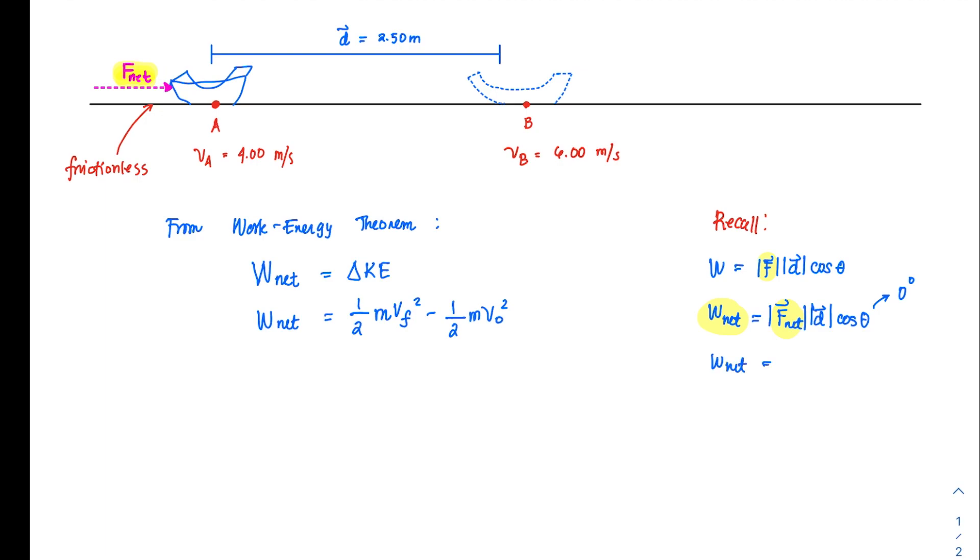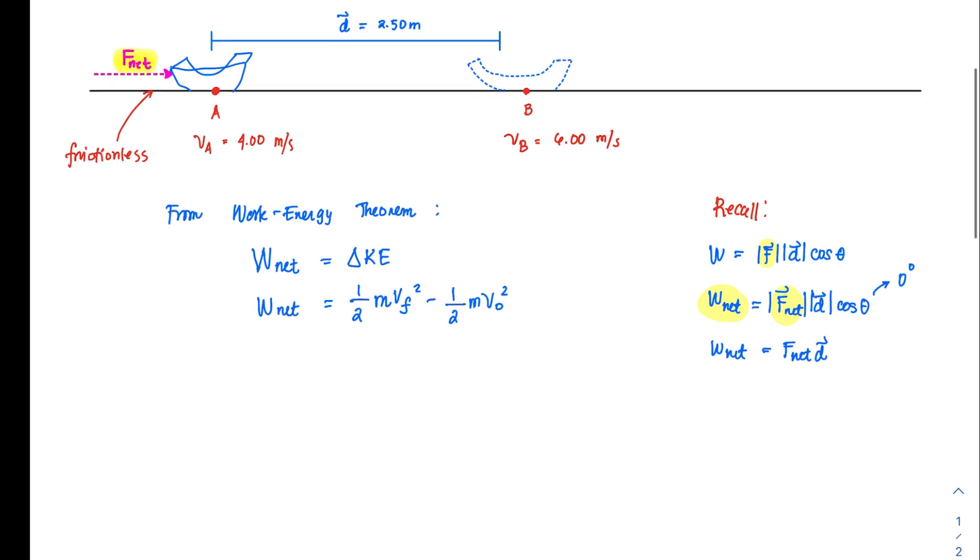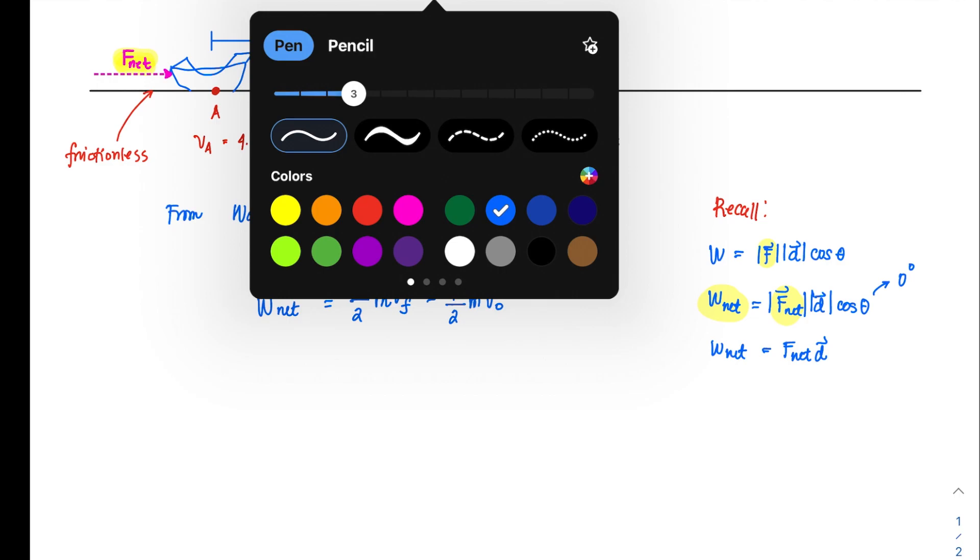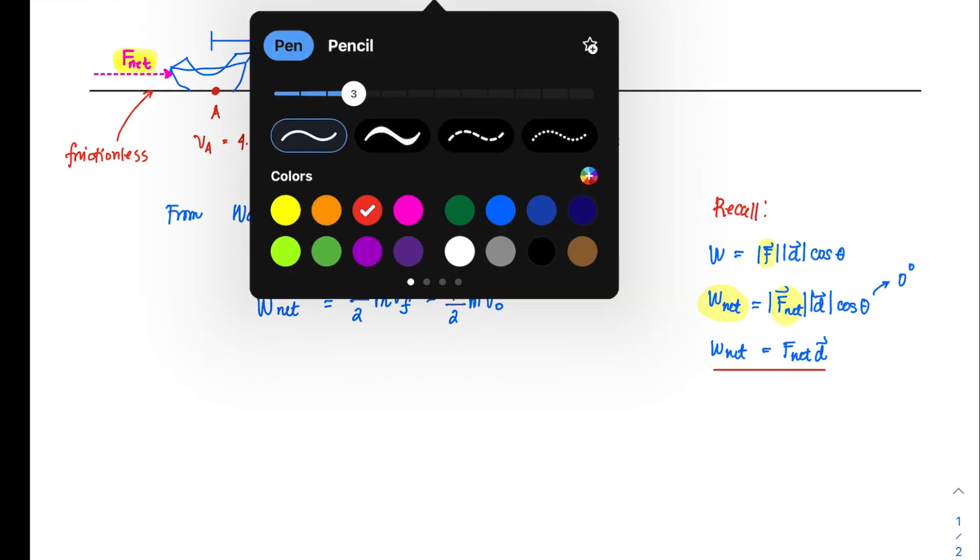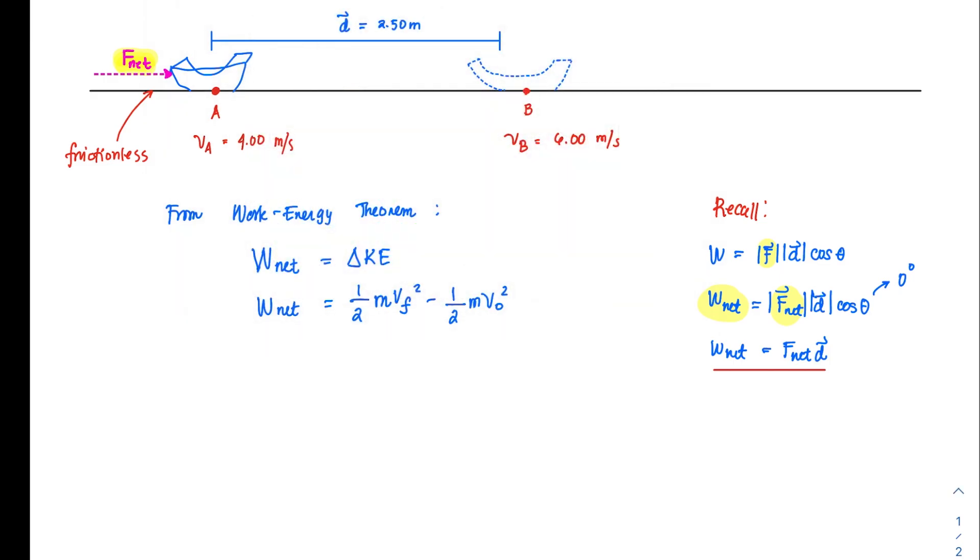So that leads us to this equation that the network is just, I'm just, I'm going to take the absolute value from the equation so that it will be easier, f net times the displacement. So that means to say that this expression over here could be something that we can substitute from the equation of work. So we can express this one then as f net multiplied by the displacement is just equal to the change in the objects or in the sleds velocity.